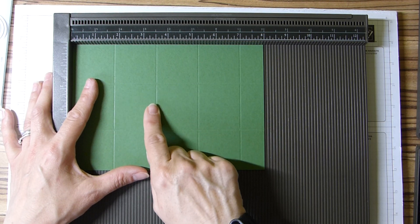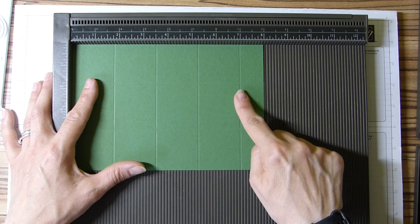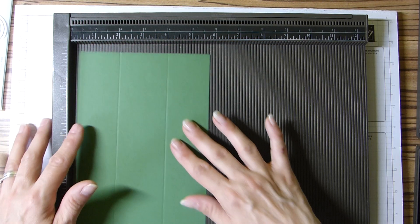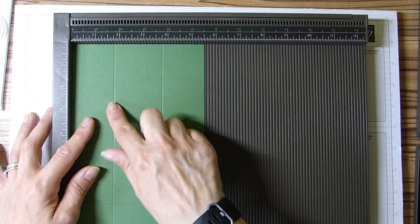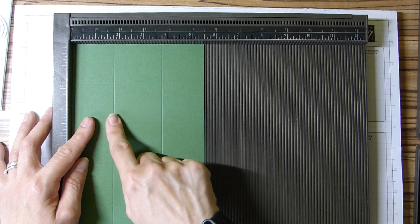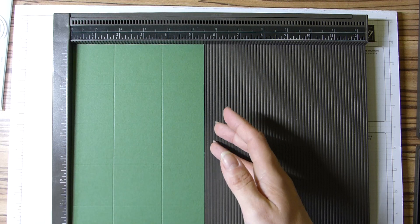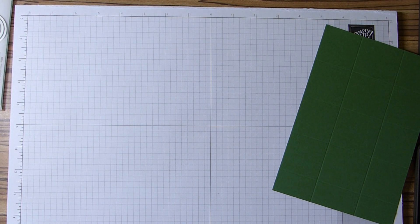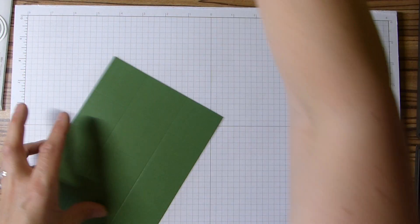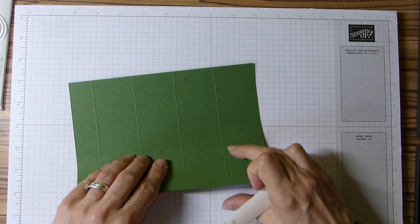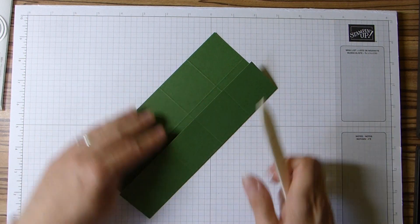On the short side, we score at 1 and 3/4 and 3 and 3/4 inches, which is 4 and 1/2 and 9 and 1/2 centimeters. As you know, we're going to fold and burnish these beautiful score lines.